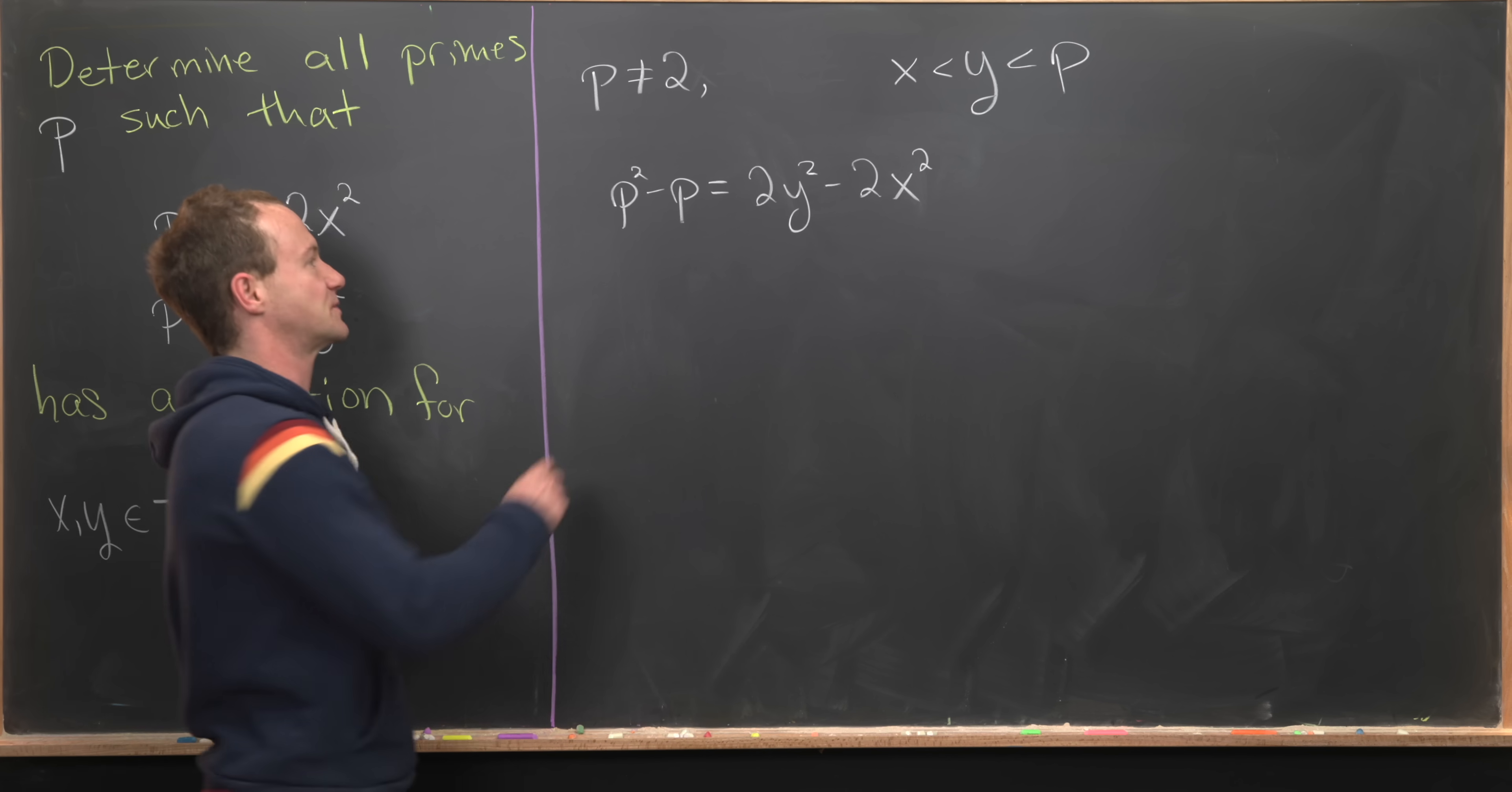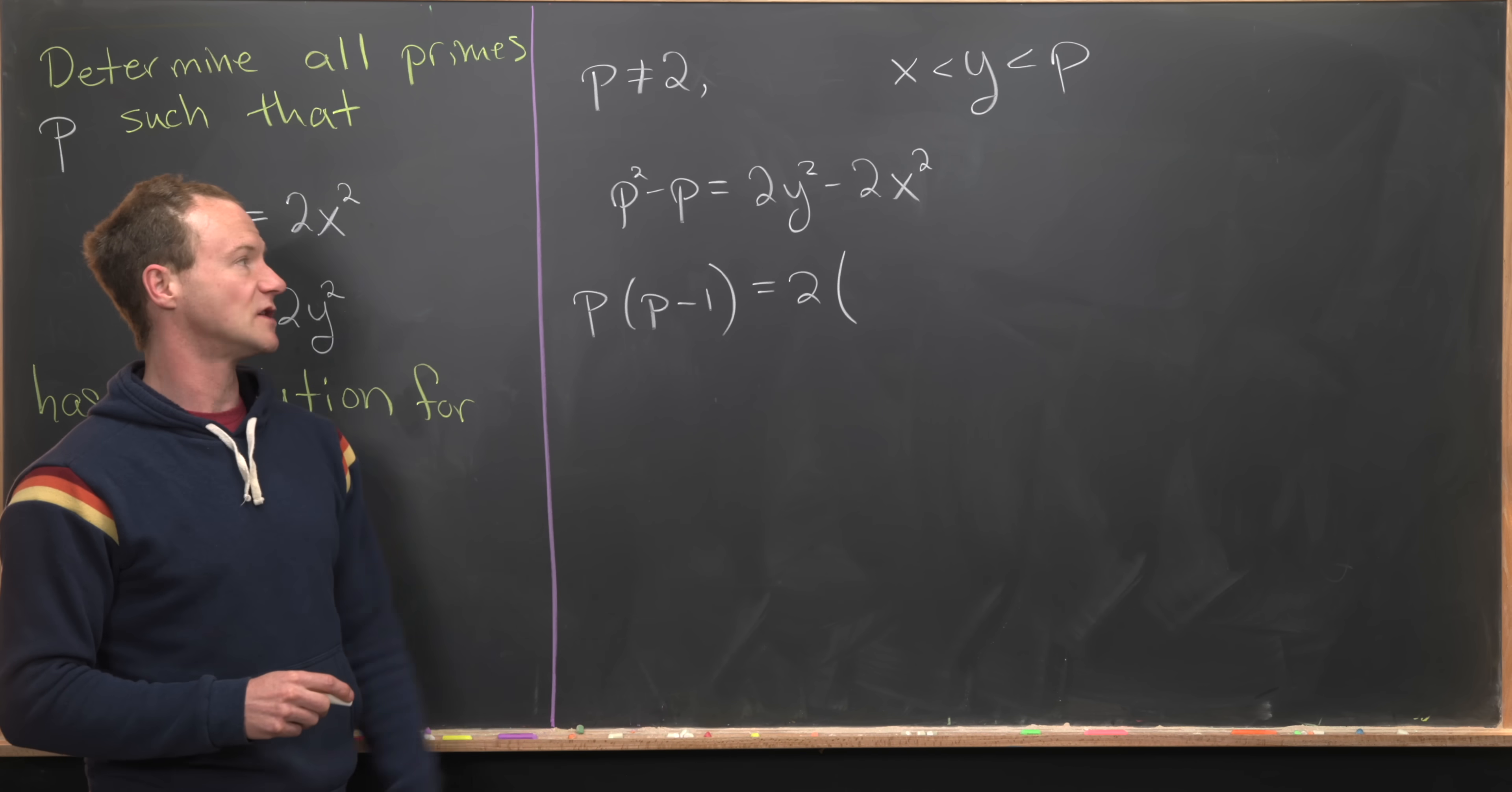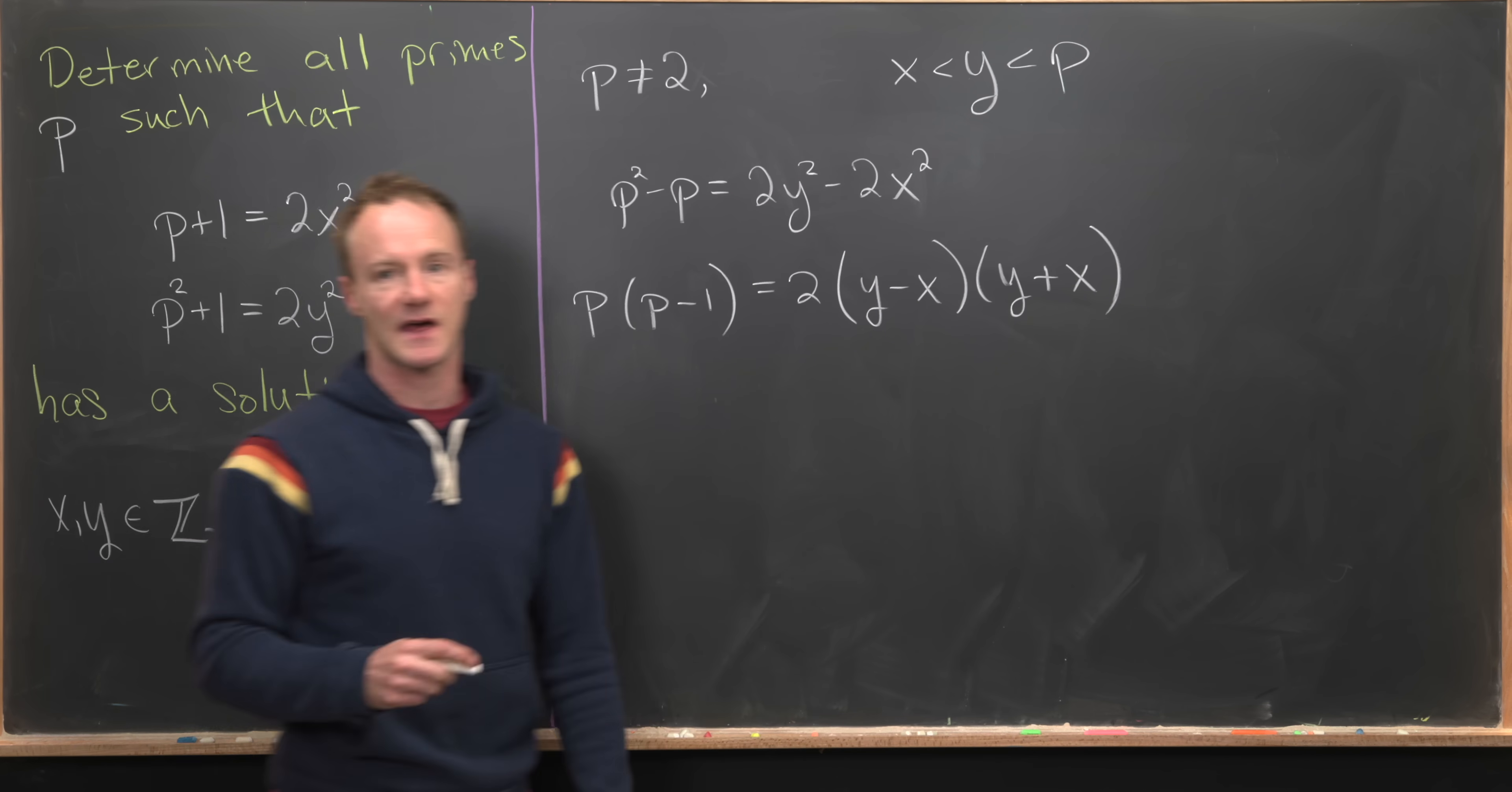This is begging to be factored. The left-hand side factors as p times (p−1). The right-hand side can be factored in two steps: first take out a 2, then factor as a difference of squares, giving us 2(y−x)(y+x).